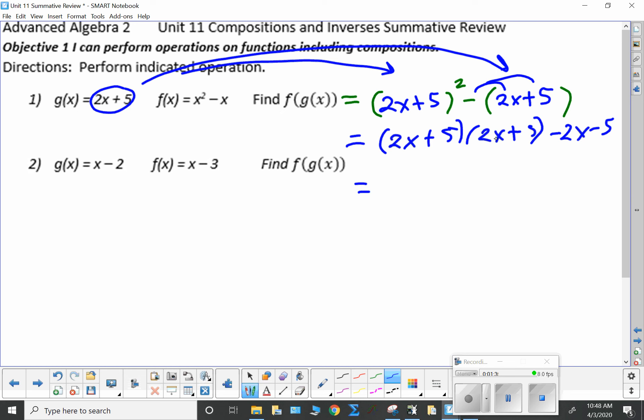When you FOIL this one, you're going to wind up with 2x times 2x is 4x squared. 2x times 5 is 10x. Another 5 times 2x is another 10x. And 5 times 5 is 25. And we still have the minus 2x minus 5.